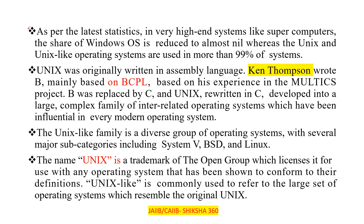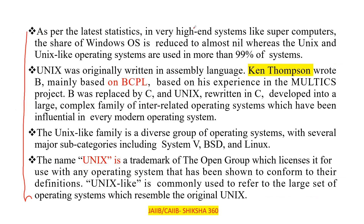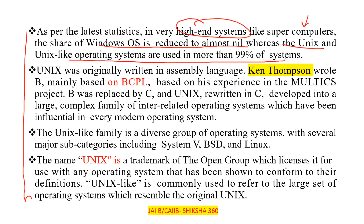In very high-end systems like supercomputers, the share of the Windows operating system is reduced to almost nil, whereas Unix and Unix-like operating systems account for about 99 percent of such systems. Unix was originally written in assembly language — this is a very important point and has already been asked in examinations.